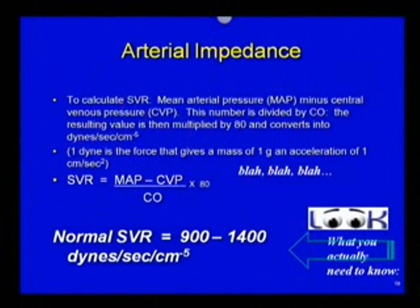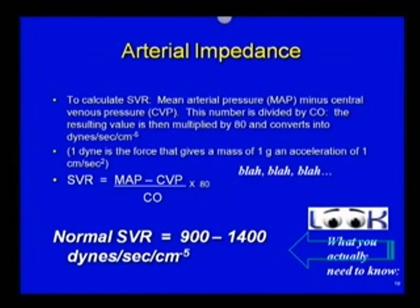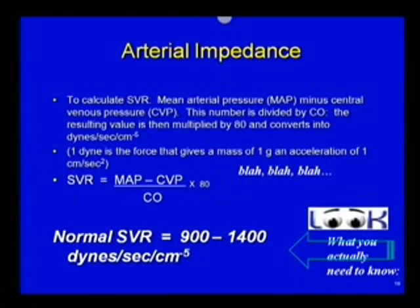To calculate arterial impedance, we take the mean arterial pressure minus the central venous pressure, divided by the cardiac output. This is confusing stuff — it's so confusing, in fact, if you notice on my slide, I wrote 'blah blah blah' right there in the middle. Anytime math gets involved, my brain starts to shut off. Your SVR is mean arterial pressure minus central venous pressure divided by cardiac output, then multiplied by 80, to get your normal SVR. For test purposes, what you need to know are those numbers — you don't really need to know how to calculate that complicated math formula.